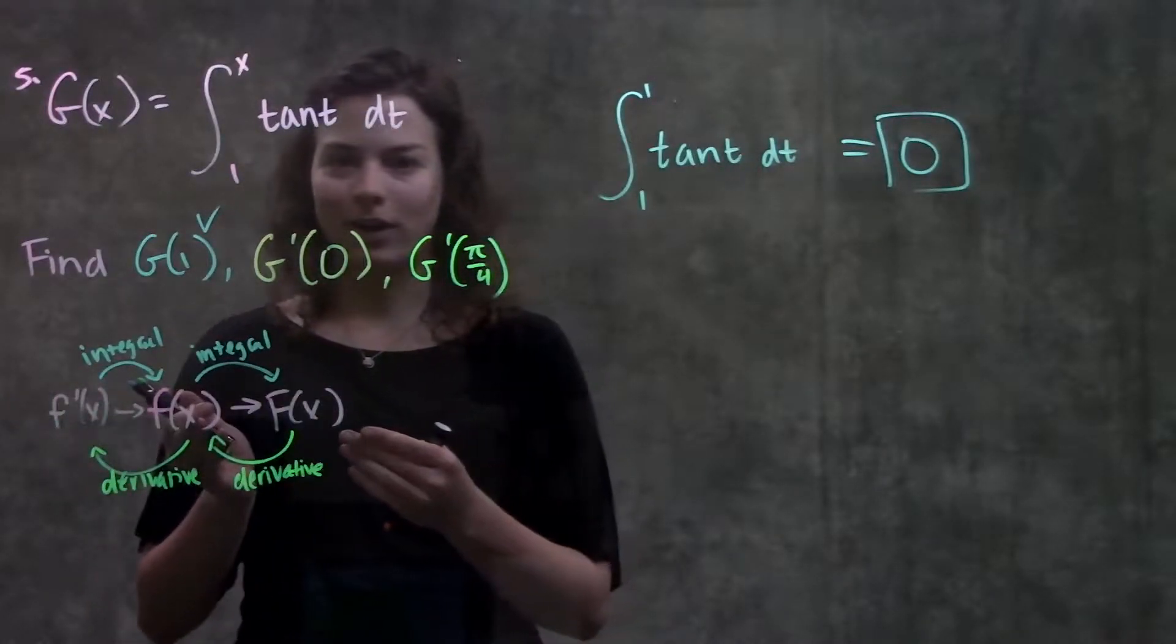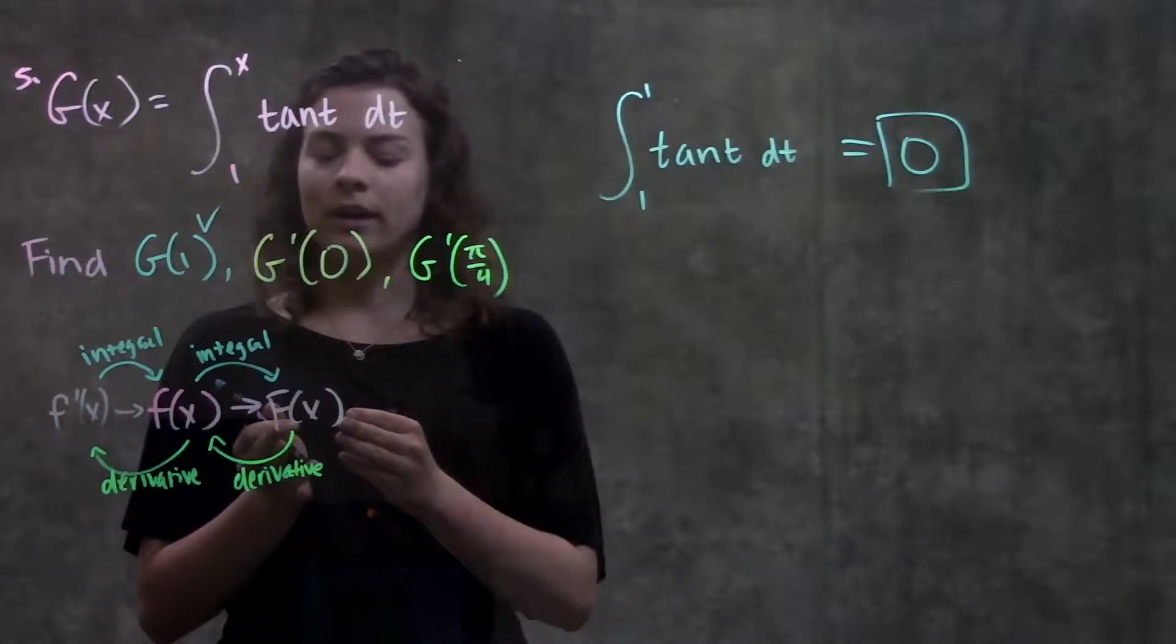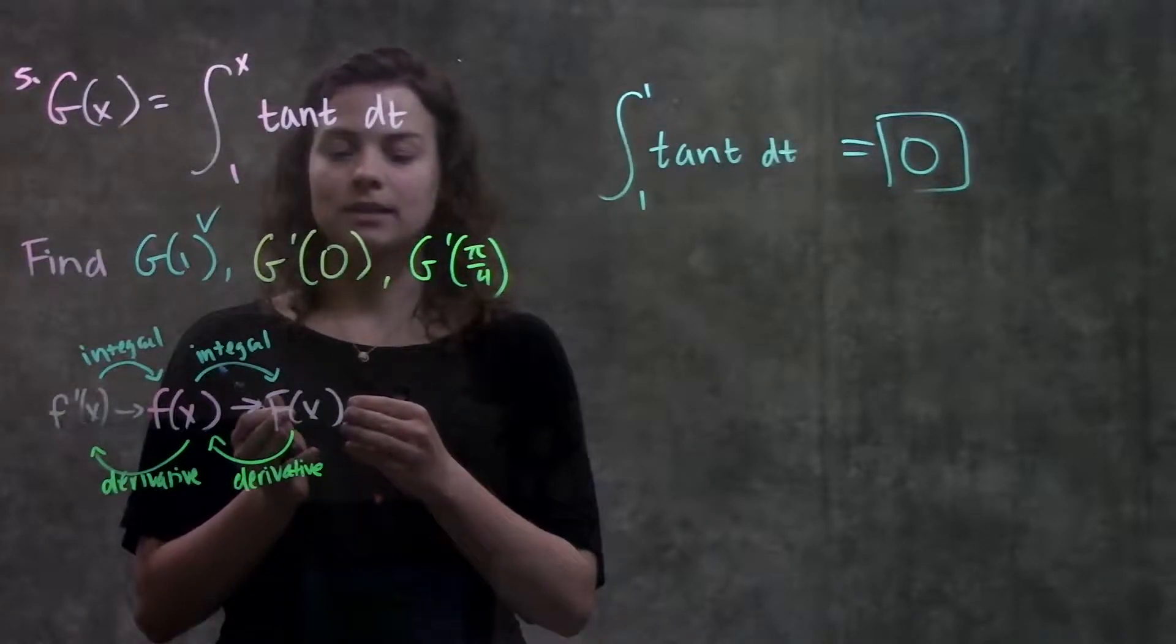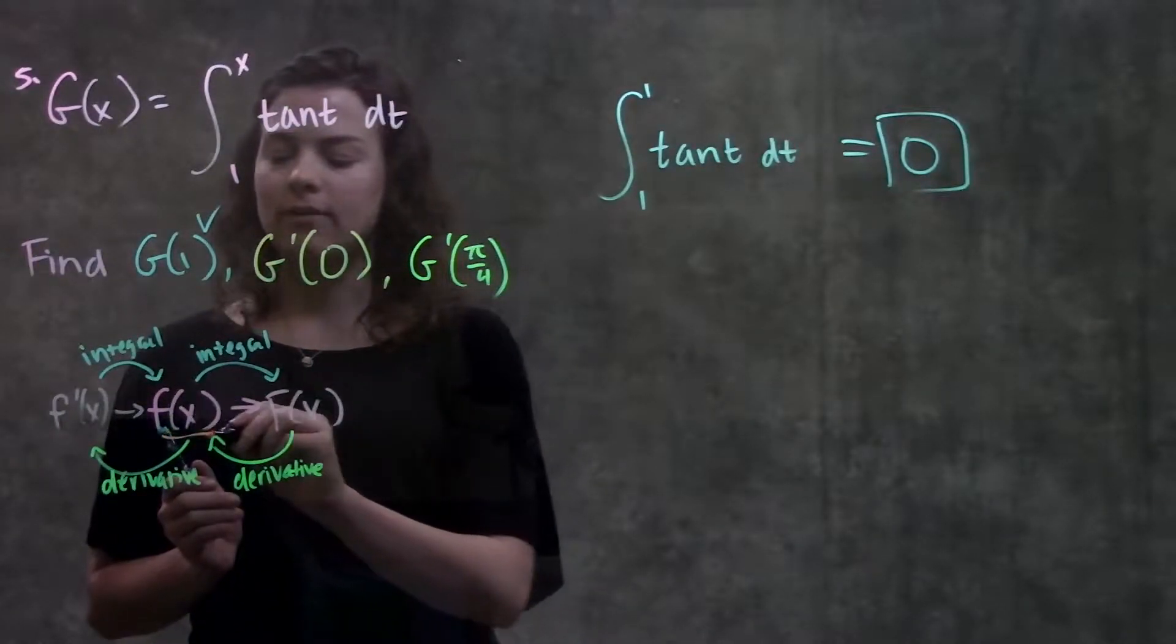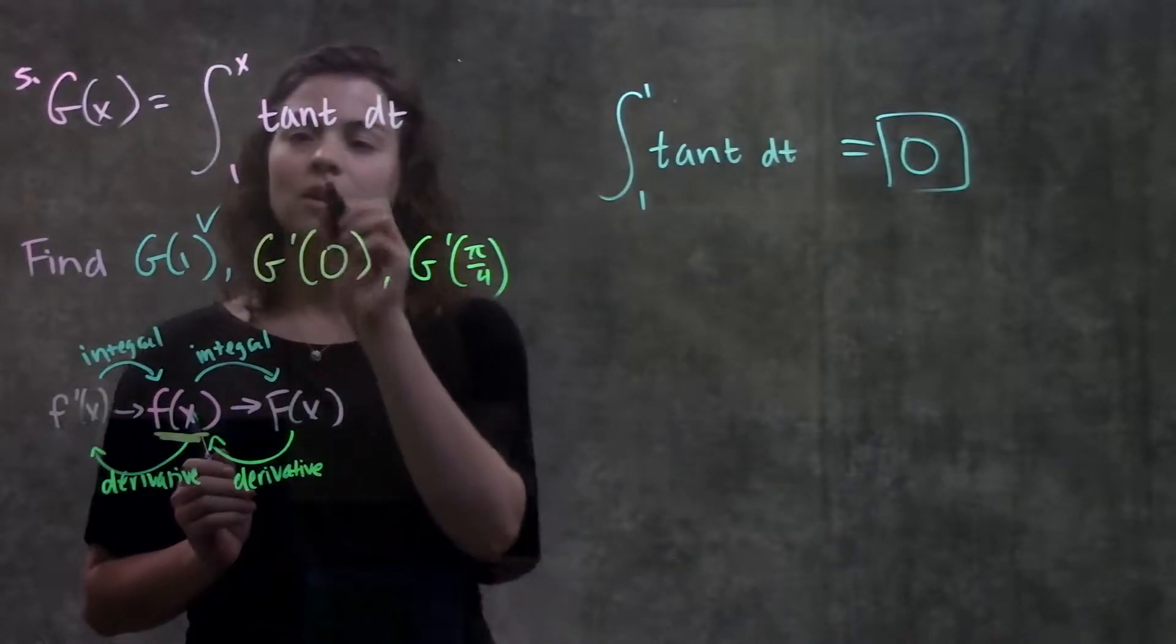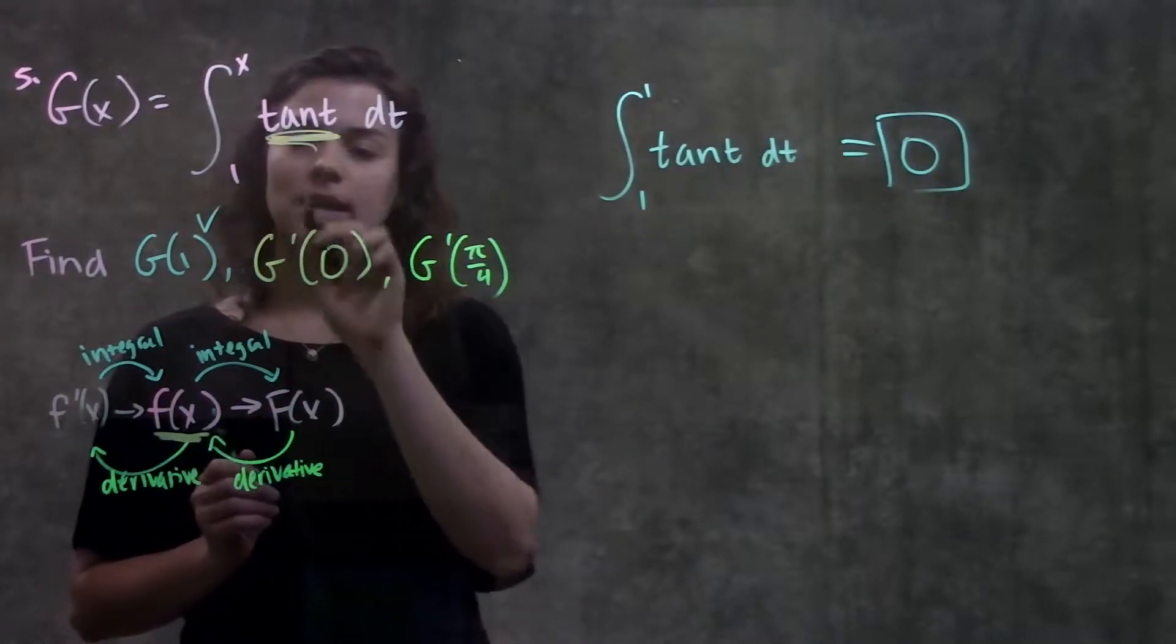if you look down at this chart I drew over here, we're over here at our integral, big g of x. When we take the derivative of that function, we're just left with our original function, or this thing here in the middle.